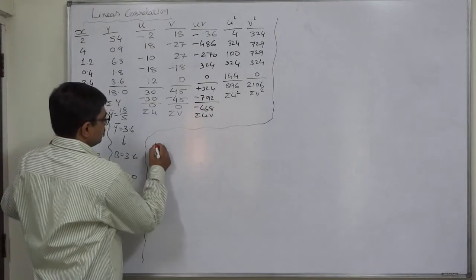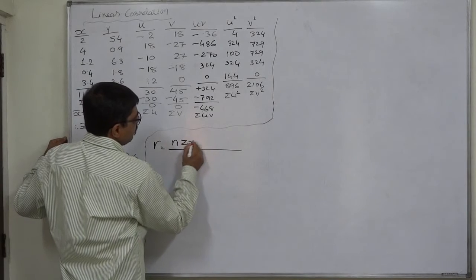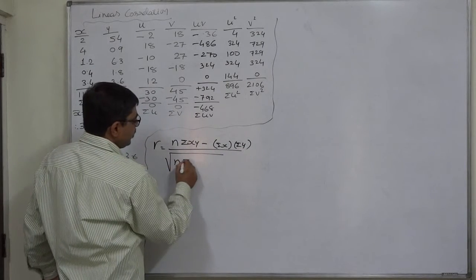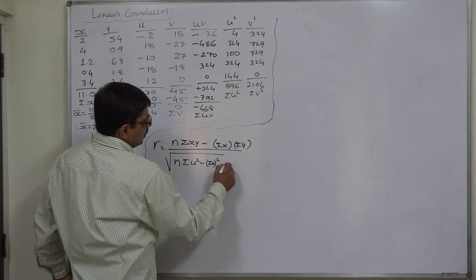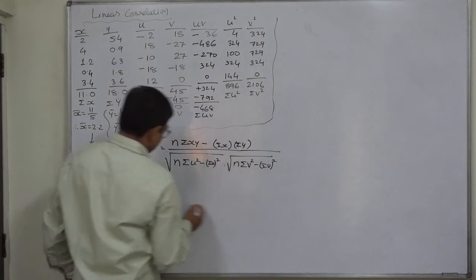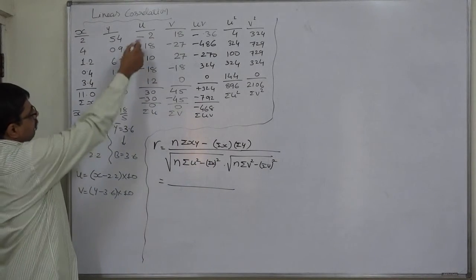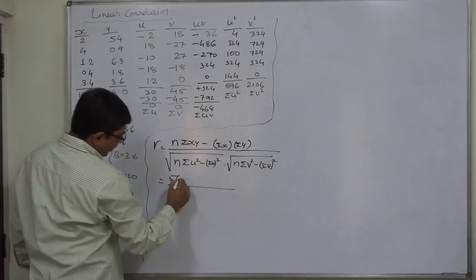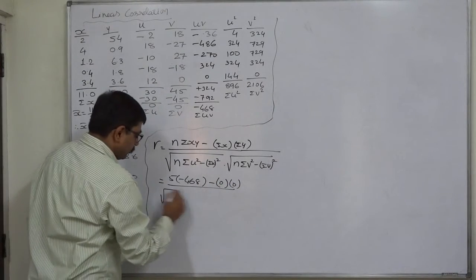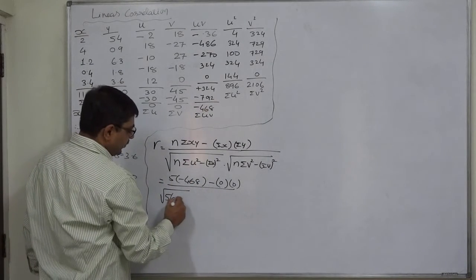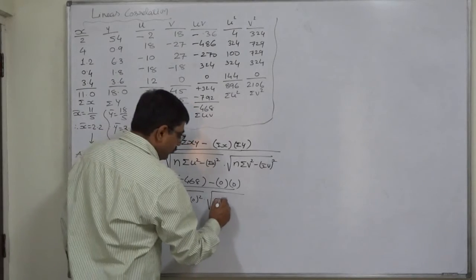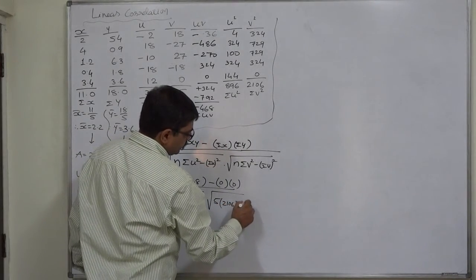The coefficient of correlation formula is n times sigma uv minus sigma u into sigma v, upon square root of n into sigma u square minus sigma u whole square, into square root of n into sigma v square minus sigma v square. Let us substitute the values. n is 5, 5 into sigma uv minus 468, sigma u is 0, sigma v is also 0, into square root 5 into sigma u square that is 896 minus 0 square, into square root 5 times sigma v square, that is 2106, minus 0 square.